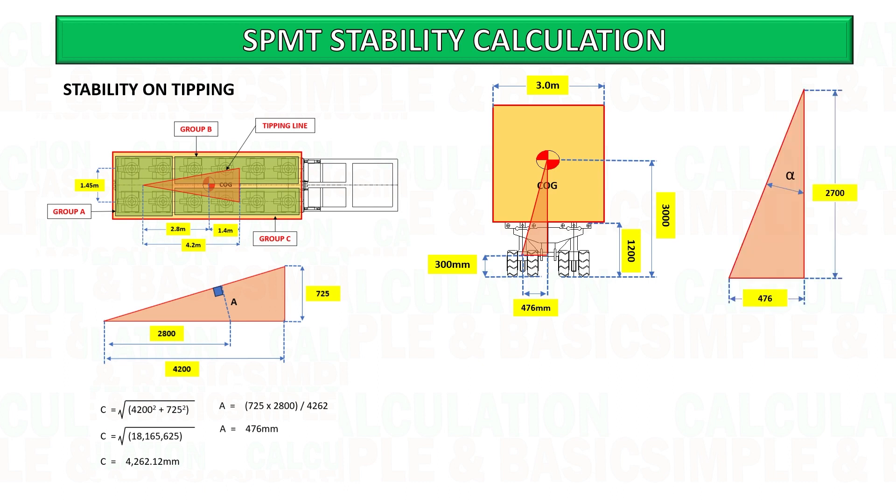Once we get the value of a, we can start to calculate the stability angle. Base a is the distance of cargo center of gravity from the ground. A is the distance of cargo center of gravity to the tipping point of the trailer. You can pause the video and follow the calculation.